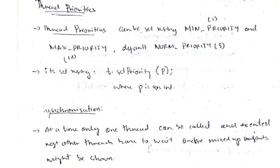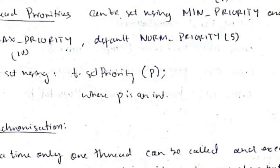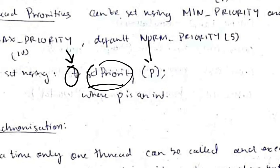There are three constants for defining thread priorities: MIN_PRIORITY with value 1, MAX_PRIORITY with value 10, and NORM_PRIORITY with value 5. To set a thread's priority, use t.setPriority(p), where p is the integer priority value you want to assign.